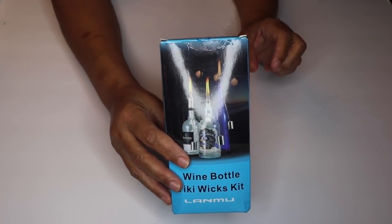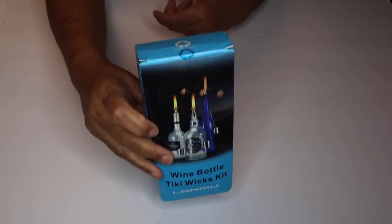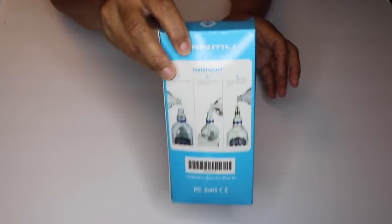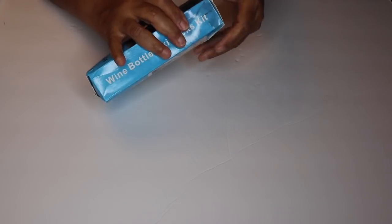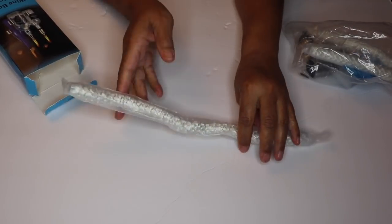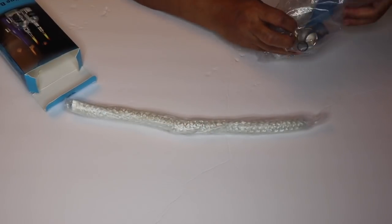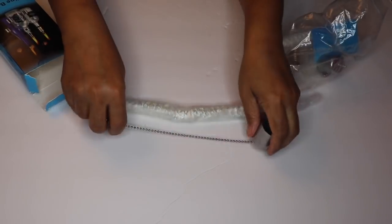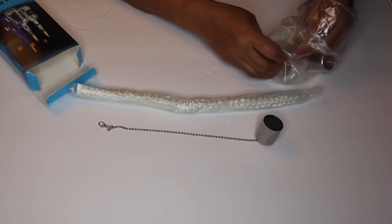They also sent this wine bottle tiki wicks kit. And this kit is super easy to use as well. All you need to do is add a bottle and some torch fluid. This kit comes with three 14 inch high quality wicks, three brass wick holders, six rubber rings, and three stainless steel lamp covers. You won't see all that I've mentioned because I've already constructed one of the wine bottle tiki torches.